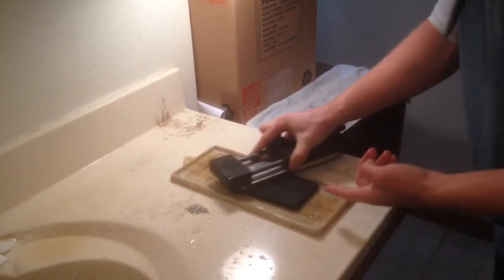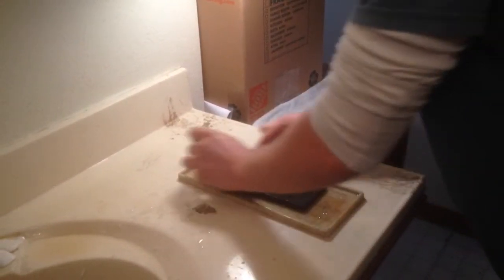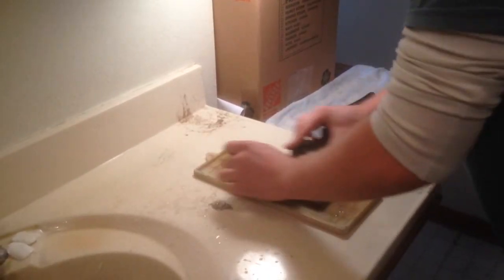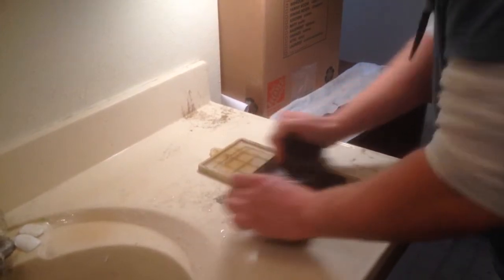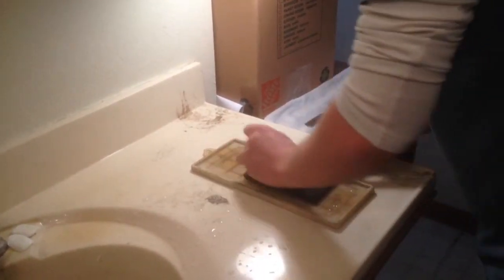So what that slurry does is it's going to remove the scratches from the 1,000 grit stone and since this is a really fine finishing stone but it has cutting power I'm going to be able to take a nice good jump here.